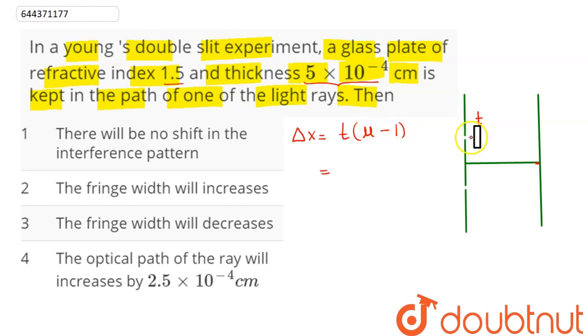Here, T is the thickness and mu is the refractive index. Since, in presence of this glass slab, the optical path increases as mu T. In absence of optical path, this becomes as T. So, this comes as mu minus 1 into T.